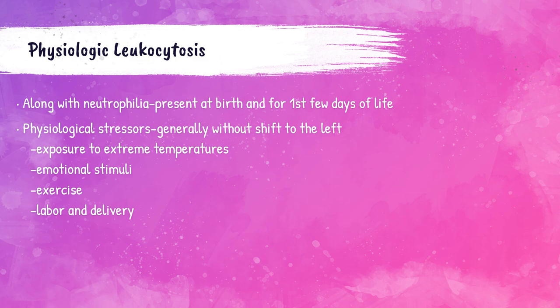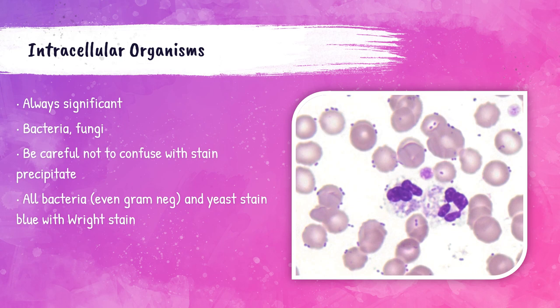Anytime intracellular organisms or any organism in the peripheral blood smear is seen, it's always significant. Bacteria or yeast can be present in the bloodstream and you can see them while doing a manual differential. The picture on the right shows bacteria present in the blood — these little purple things all over. Note this is with a Wright-Giemsa stain used for manual differentials in hematology, not a gram stain done in microbiology, so you cannot determine if a bacteria is gram negative or gram positive, only that bacteria are present.